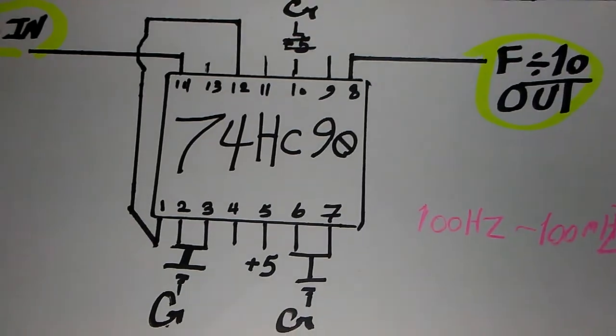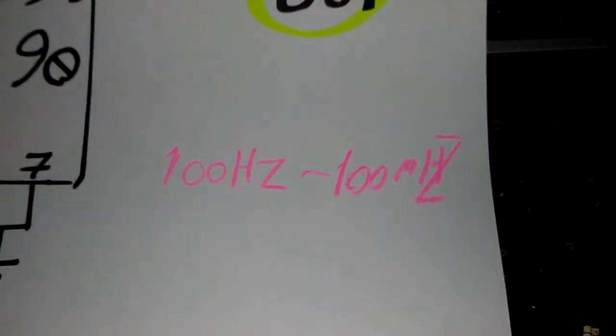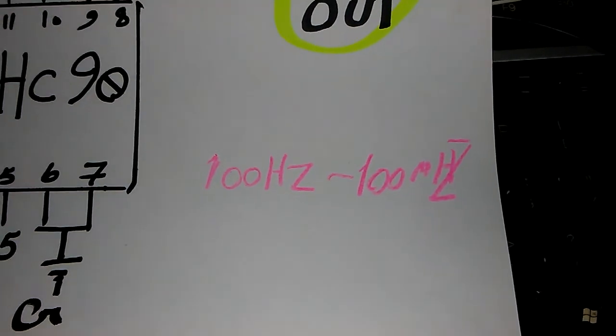we can divide by 10, by 10, by 10, and finally from 100 hertz to 200 megahertz easily.